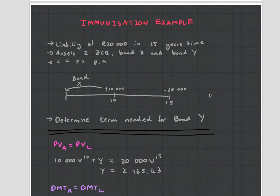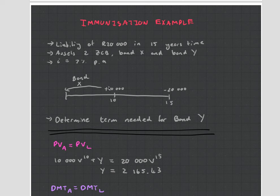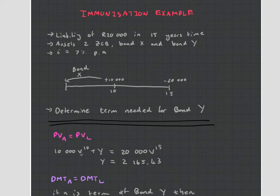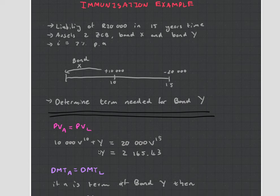Do you think Y is going to be greater than 15 or less than 15? It's good to make these little guesses early on so you can check if your answer is reasonable. Going back to the example: we've got a 20,000 Rand bond due in 15 years, a bond paying us 10,000 at time 10, and we need to determine the term of bond Y for immunization. We set up our equation of value: assets are 10,000 discounted by 10 years plus the value of Y, equal to 20,000 discounted by 15 years. We find that the value of Y at time zero is equal to 2,165.